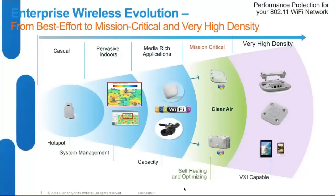Now let's talk about wireless evolution. About five years back, wireless was kind of a good-to-have technology in the enterprise network — access points were used as hotspots only. But as of today, it's a necessity to have in any network. If you're designing an enterprise network and wireless is not there, that network is not complete. Today there are devices which are wireless capable doing VXI services, and people are talking about 99.99% uptime on wireless services.